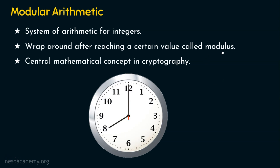When we say 13 hours, we count 1 through 12 and 13 lands on 1 — that's why it is 1 PM. What we are doing is a Mod 12 operation on 13. So 13 Mod 12: when 13 is divided by 12, we get the remainder 1.